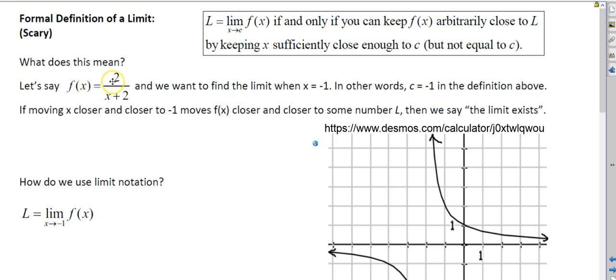So let's say f(x) equals 2 over x plus 2, and we want to find the limit when x equals negative 1. In other words, we want to get x sufficiently close to negative 1 and our limit then is going to keep f(x) arbitrarily close to some number L. And probably a more natural way to say that, if moving x closer and closer to negative 1 moves f(x) closer and closer to some number L, then we say the limit exists.